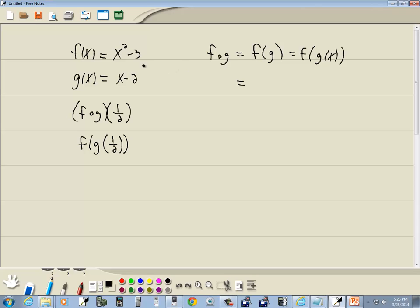Let's find our composition first. We're going to take our g(x) and put that in for the x. So we're going to have (x minus 2) squared minus 3, which gives us (x minus 2) times (x minus 2) minus 3.